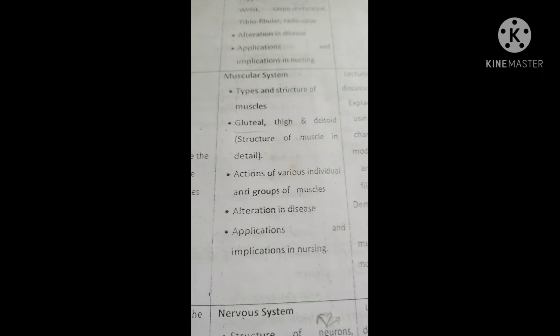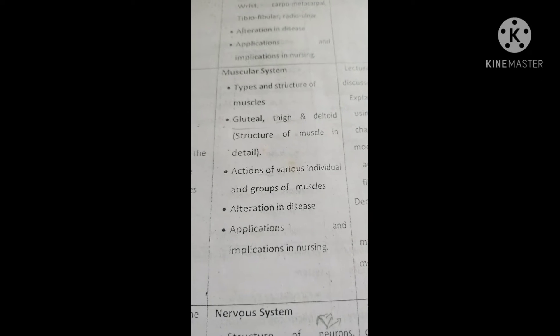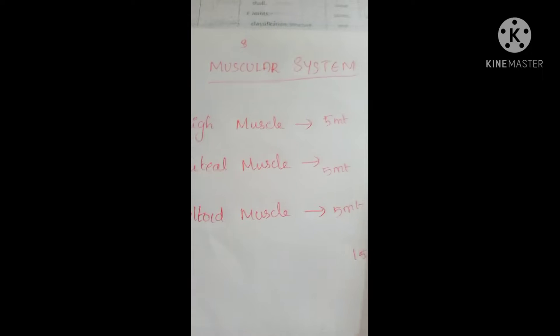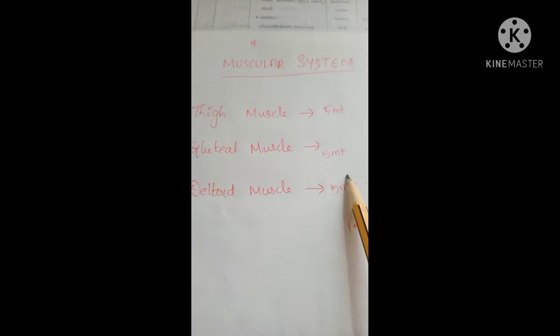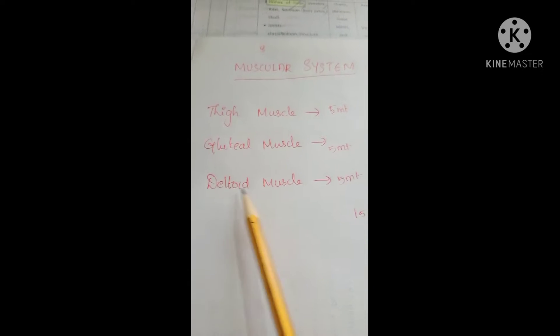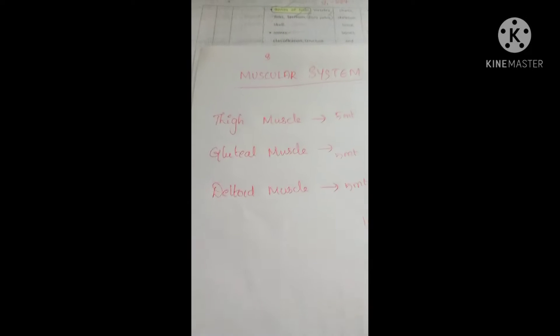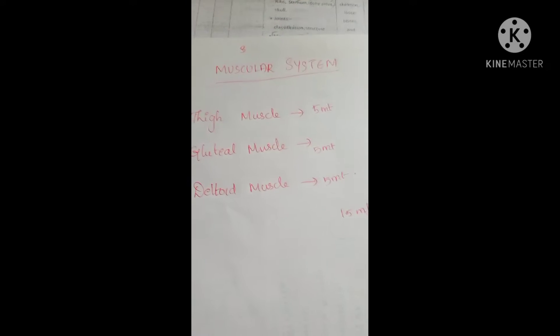The thigh muscle is 5 minutes, the gluteal muscle is 5 minutes, and the deltoid muscle is 5 minutes — a total of 15 minutes. The Muscular System will start now.